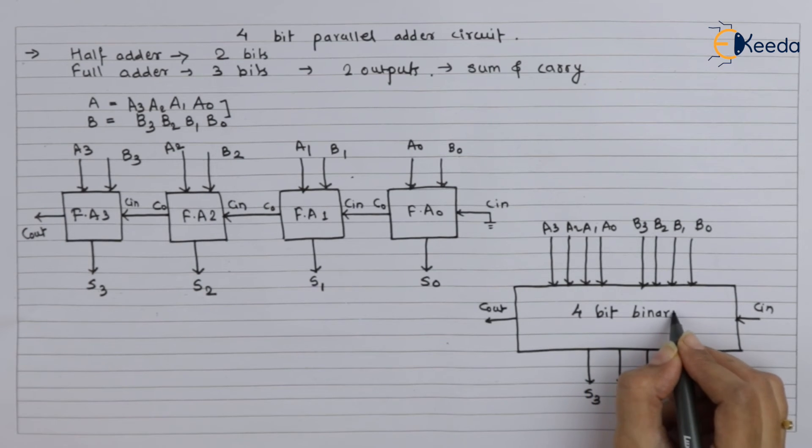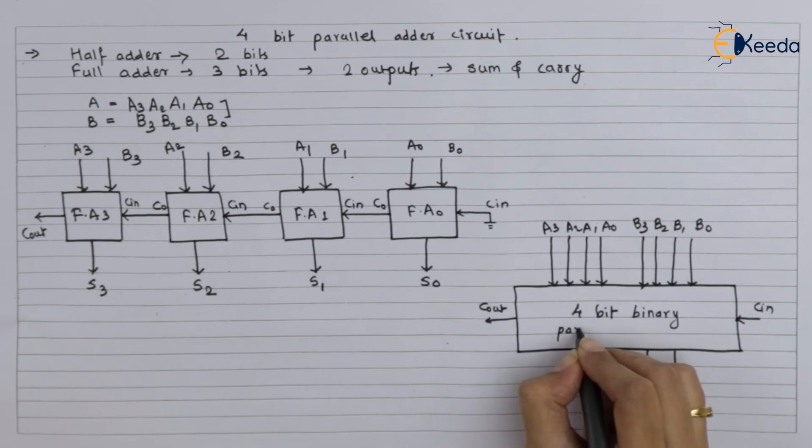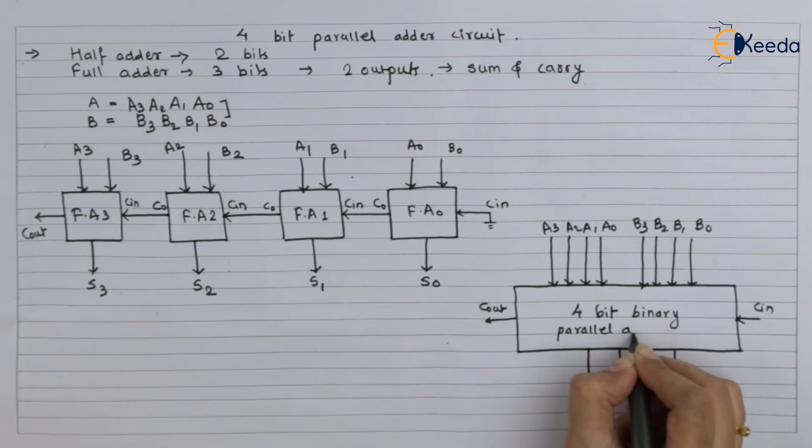And finally you are getting output sum as output: S0, S1, S2, and S3. It is a 4-bit binary parallel adder.